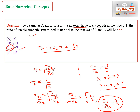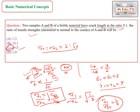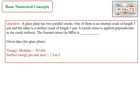The correct answer for this question is 1 to root 3. In this type of question, they give the ratio of crack lengths and ask for the fracture strength ratio, or vice versa. We have to be careful about which sample is material A and which is B, because swapping them will lead to errors when applying the inverse proportionality formula for ratios.